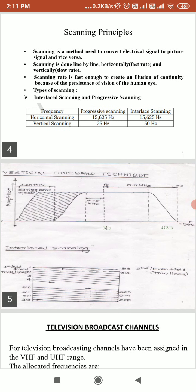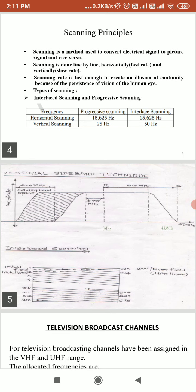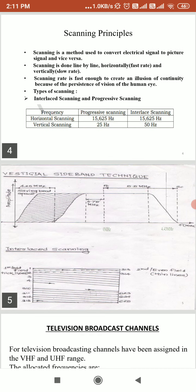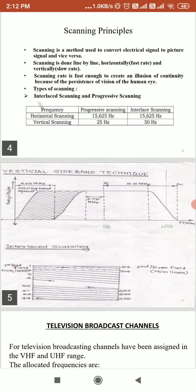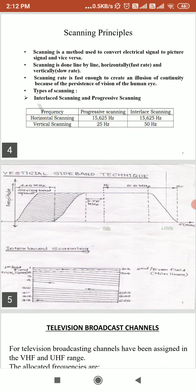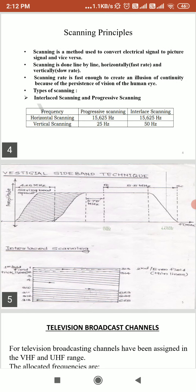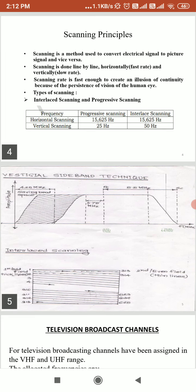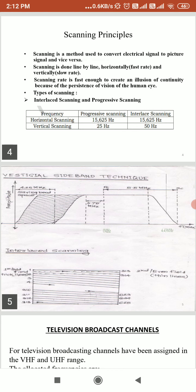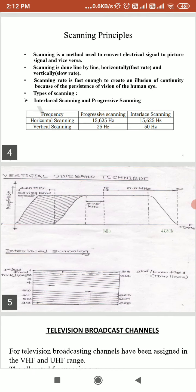Progressive scanning is used in DTV, HDTV, and PCs. With progressive scanning, the quantity of picture information increases but the bandwidth requirement also increases. So we need a compromise between picture quality and bandwidth requirement.